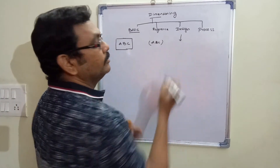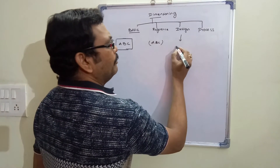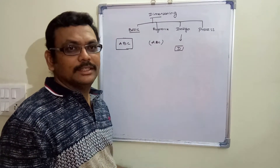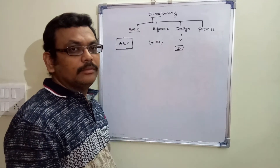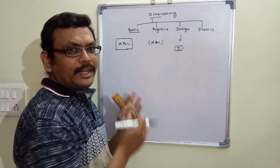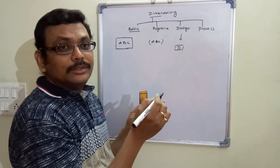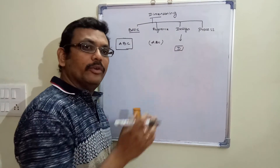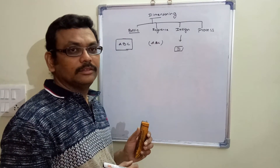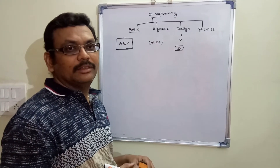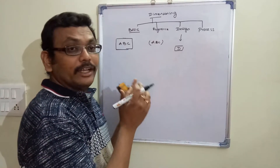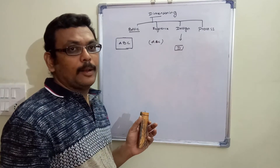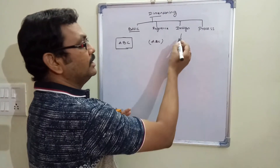Next is the design dimension. Some people indicate this in a box with the letter D, though different terminologies are used. A design dimension is a dimension used only for designing purposes — later on it is removed and is of no use. We give it only for the sake of designing.